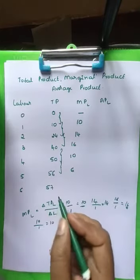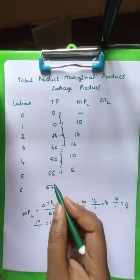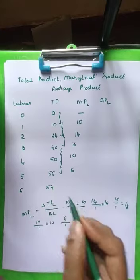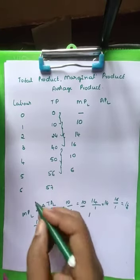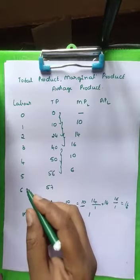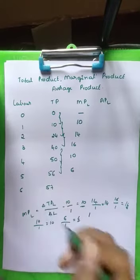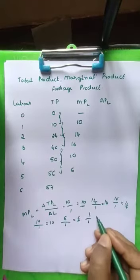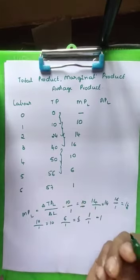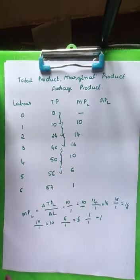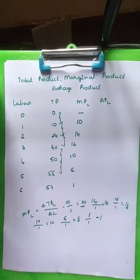Now 57 minus 56 is 1, divided by 6 minus 5 which is 1, so 1 divided by 1 equals 1 — the marginal product is 1. Like this we calculate the marginal product. I hope you are clear on how to calculate marginal product.